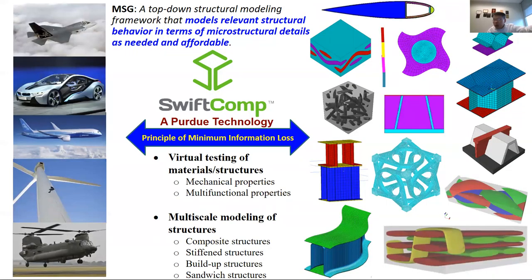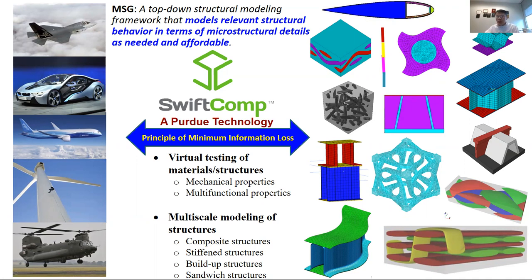In the same spirit, within structures and materials there are so many models — MSG unifies them all: beams, plates and shells, similar beams, sandwich structures — all handled using this simple concept. The last slide summarizes the structures we have analyzed, including short fiber systems, woven composites, rotor blade cross-sections, laminates, curved unit cells, metamaterials, 3D woven and braided materials. The core idea: minimize loss of information between the model you know and the model you want — a top-down framework that models relevant structural behavior as needed and as affordably as possible.